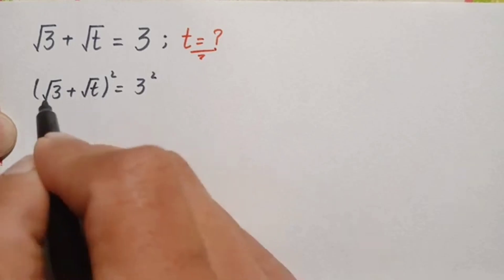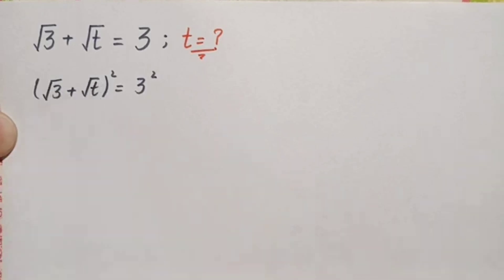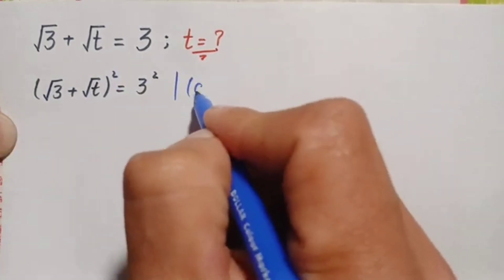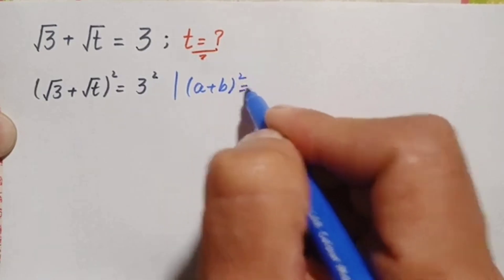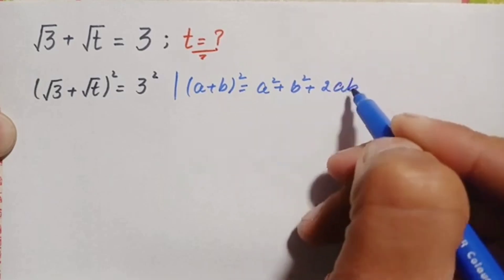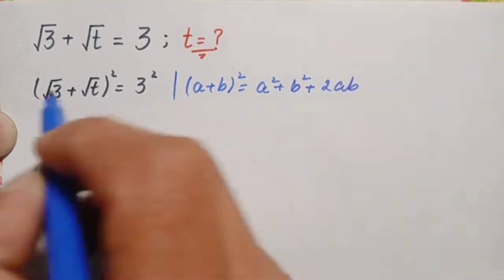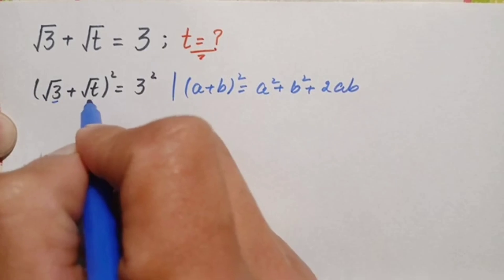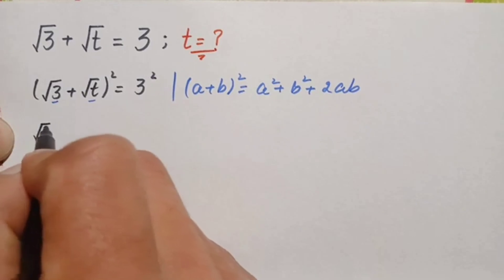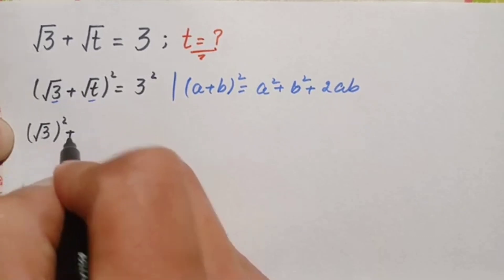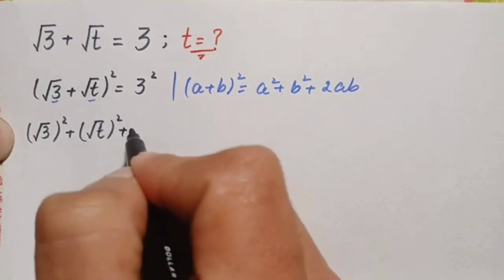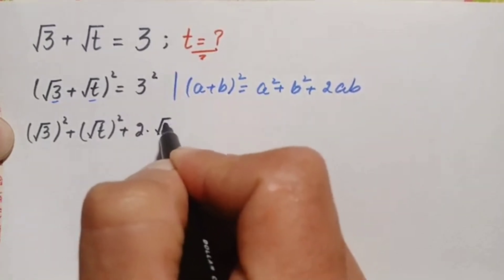On the left hand side we will use the famous algebraic identity: (a + b) whole square is equal to a squared plus b squared plus 2 times a times b. Here our a is square root of 3 and b is square root of t.